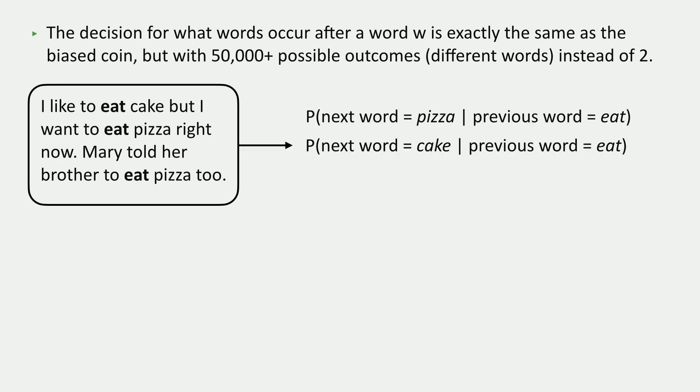Now, I claim that you can give me a guess as to what the probability of the next word equals pizza is given that the previous word equals eat. Or the probability that the next word equals cake is given that the previous word equals eat. And the way that you can do this is go through and count up. Okay, if we see eat three times, how many times was it followed by pizza?